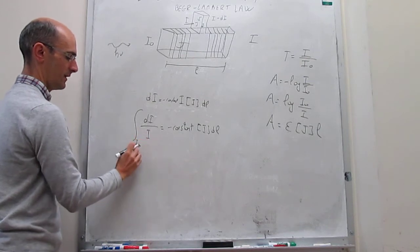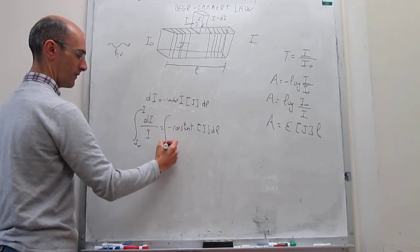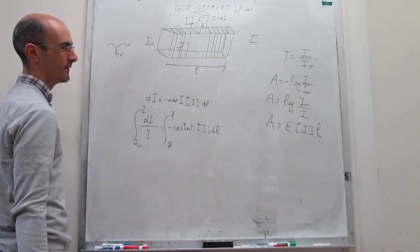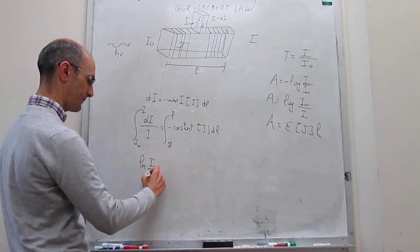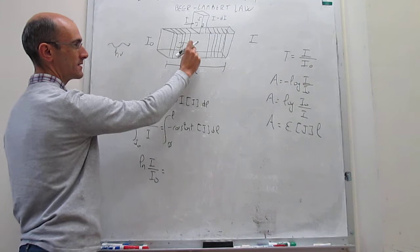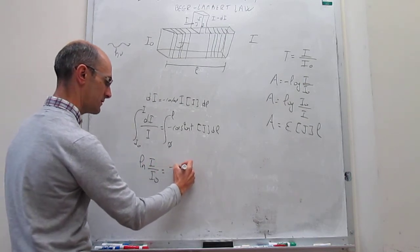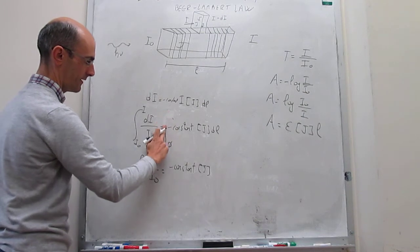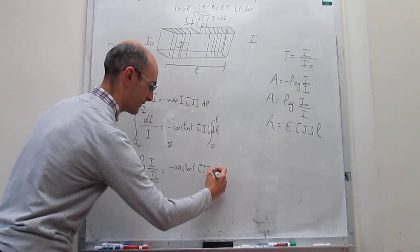The change in intensity goes from the start of the experiment, where the intensity is I₀, to the end, where the intensity is I. This is integrated from l = 0 at the start of the cuvette to the entire path length l. The integral gives the natural log of I over I₀ equals minus constant times concentration of J — which is constant throughout the cuvette — times the path length l.